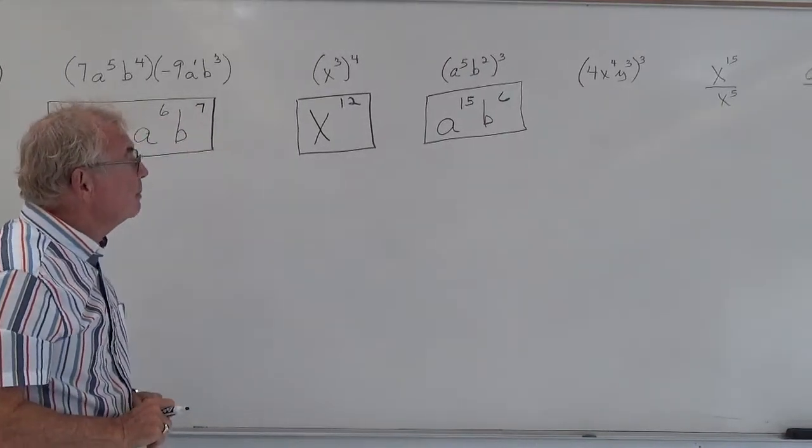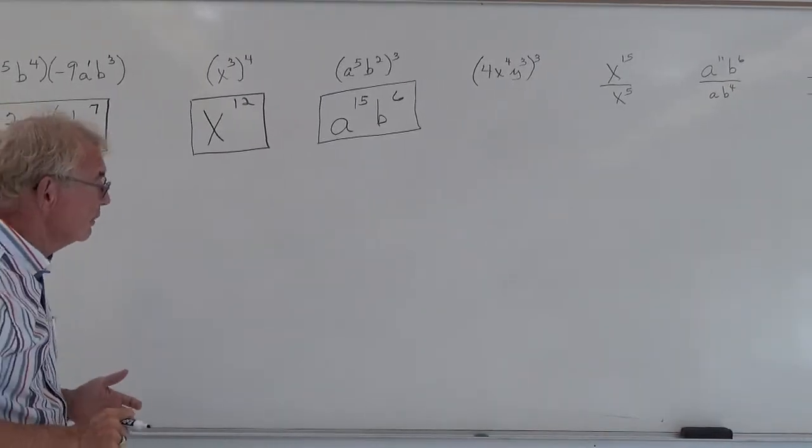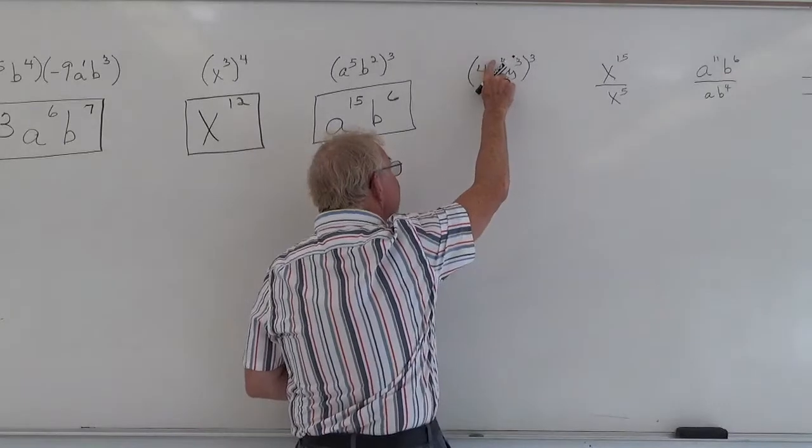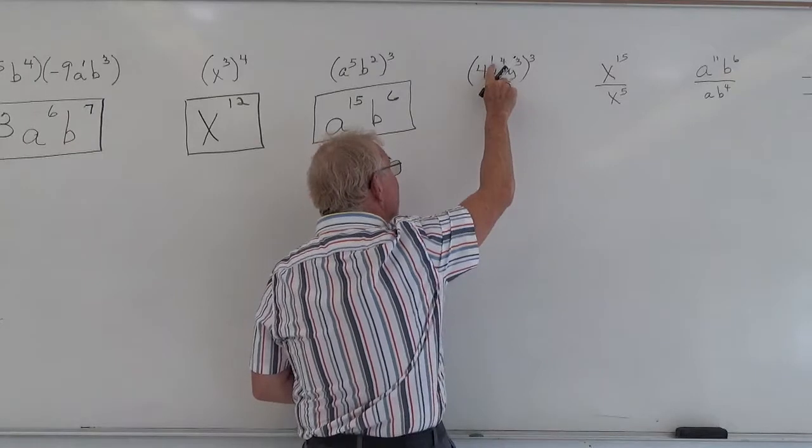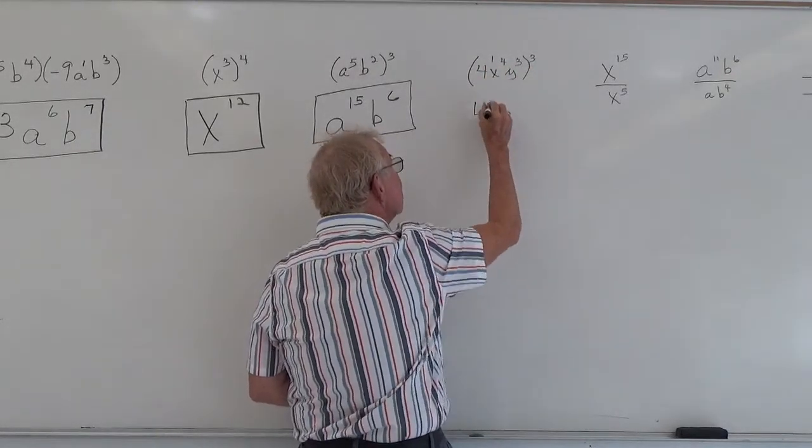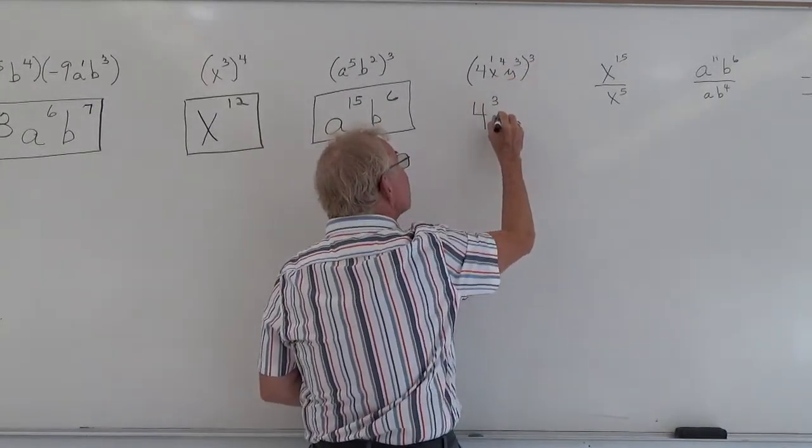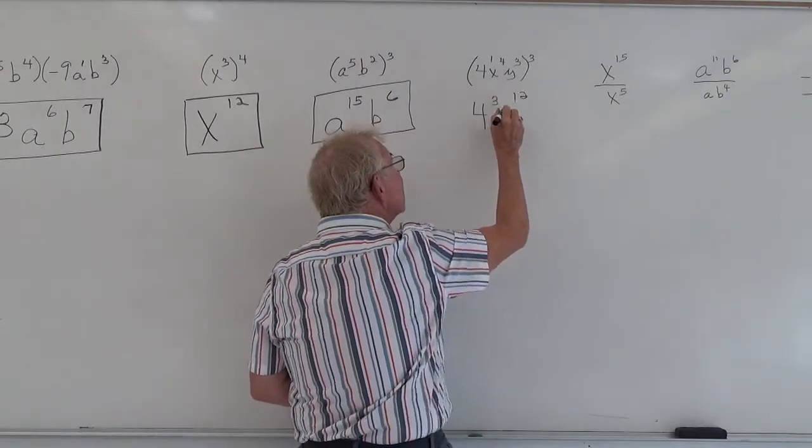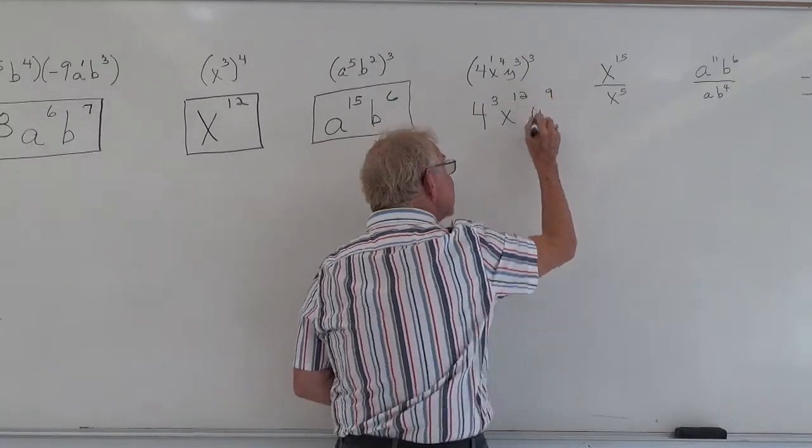A third example of the power, we have a number now, a coefficient. So remember, if you don't see an exponent on that 4, it's understood to be a 1. So applying the same rule, you would multiply 1 times 3, so that would be 4 cubed. You multiply the 4 times 3 and you would get x to the 12th, and you multiply the 3 times 3 and you get y to the 9th. Now that's correct.